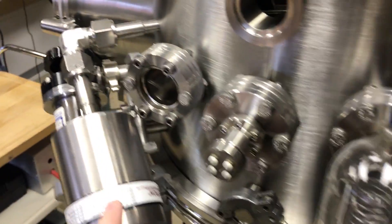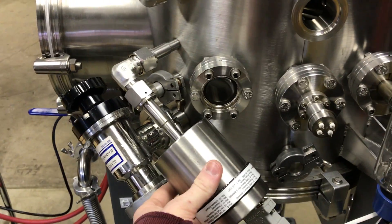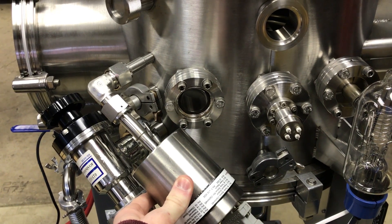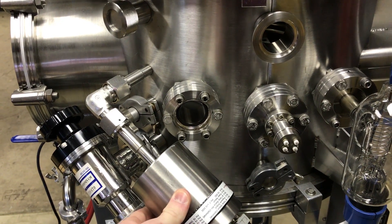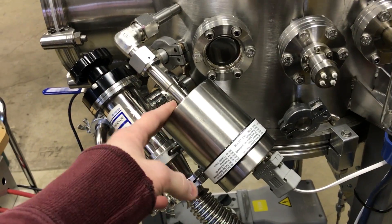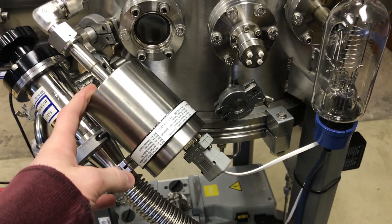But in my case, I'm using this baratron pressure transducer here. This gets me down to 0.001 torr, roughly. It gives me an analog voltage out, and that's pretty simple to use.